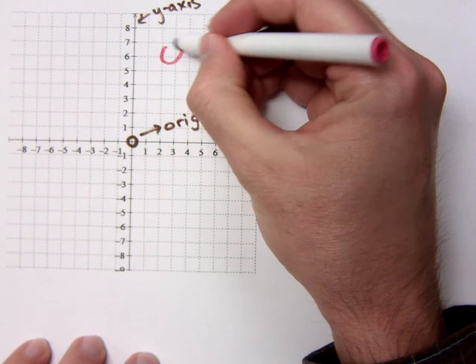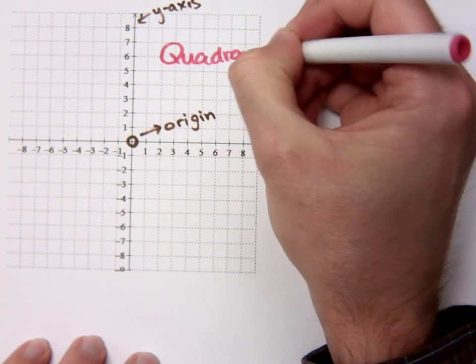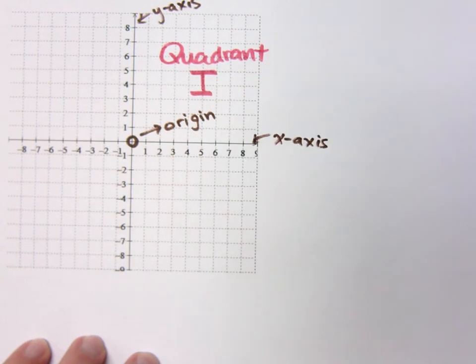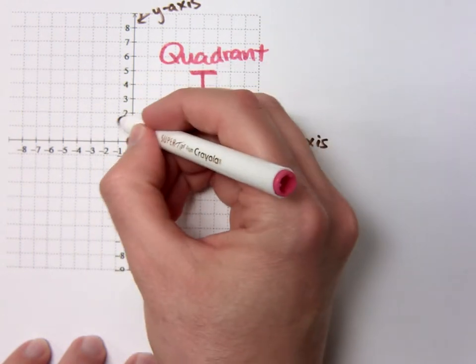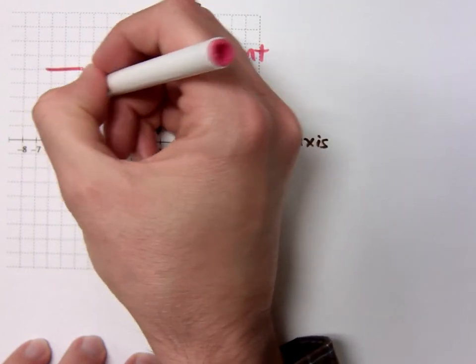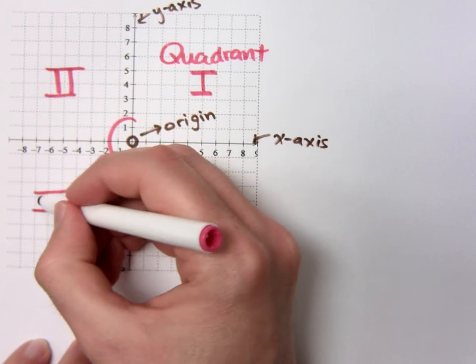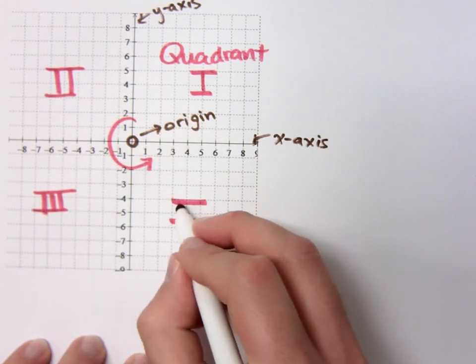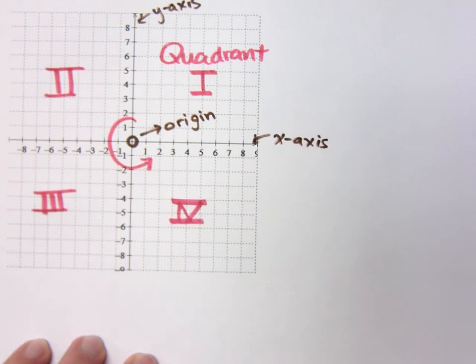So we would label them like this. This is quadrant one. And we use Roman numerals here. It's quadrant one. And you go in a counterclockwise fashion to label the rest of them. It's quadrant two. Quadrant three. And quadrant four.